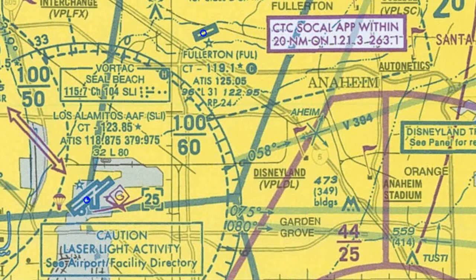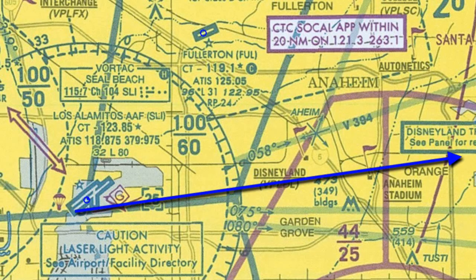For part 3 of the VOR navigation, I'm going to show you how to fly a specific radial from the VOR. In this case, it's going to be a radial of 068 from the Seal Beach VOR. You have to remember, we are only using VORs for these lessons — we cannot use any DMEs, ADFs, or GPS.